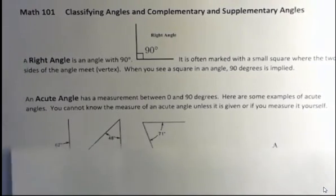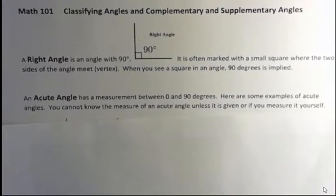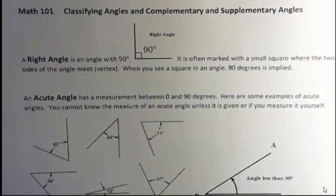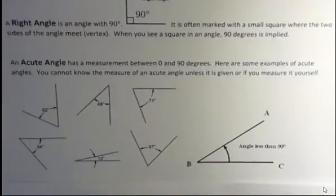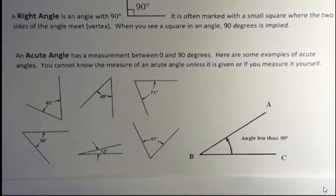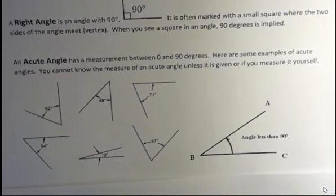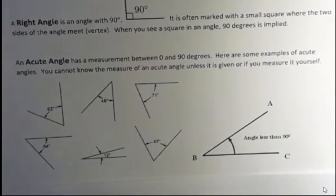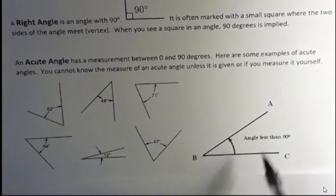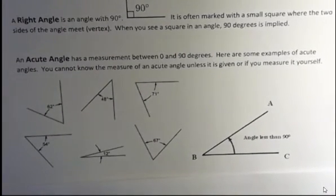An acute angle has a measurement between 0 and 90 degrees, so that means it's less than 90. And below are some examples of acute angles. You don't know what the value of the measurement of an acute angle is unless it's given to you or unless you measure it, because you can't tell by looking at something. You might go, it looks about like half of 90, it could be 47, it could be 42, but anytime you have an angle that is less than 90 degrees, we can say that it's an acute angle.